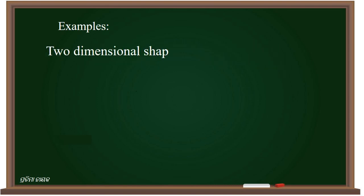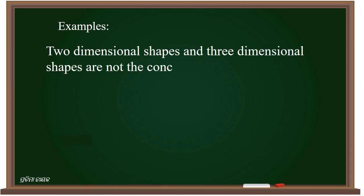Examples: two-dimensional shapes and three-dimensional shapes are not concepts of the same complexity. So at the age of seven to nine, we can teach two-dimensional shapes, and after that we can teach three-dimensional shapes.